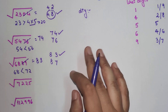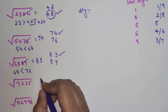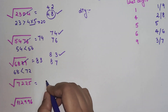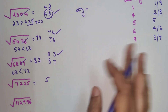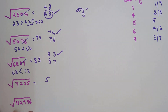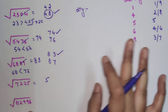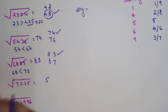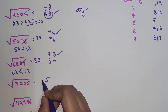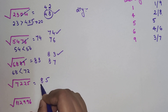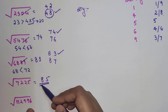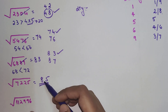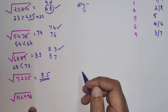For a number ending in 5, we already know any number ending in 5 will always have unit digit 5. So if we have something like 7225, you can see that 72 is close to 8², and you don't have to do any guesswork — you can directly write the answer as 85.